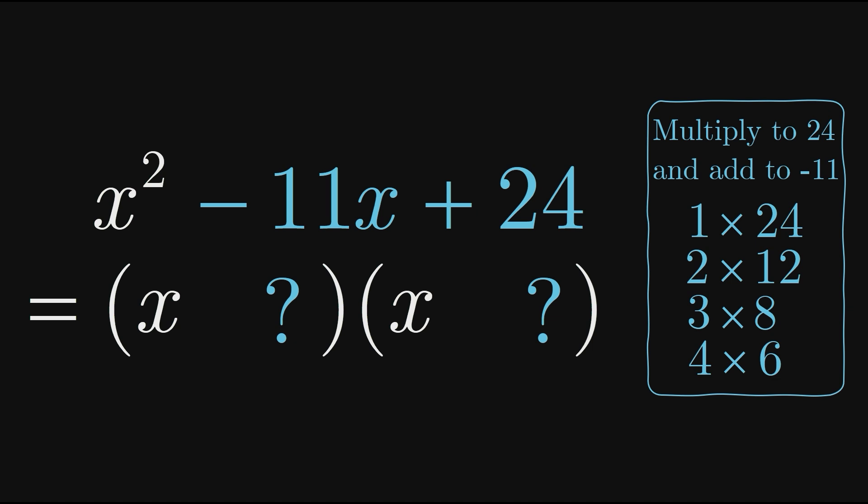But wait a minute, none of these pairs will add to negative 11 because they're all positive values. Notice that 3 and 8 add to positive 11 though. If we make both of these values negative, they'll now add to negative 11 and still multiply to positive 24.